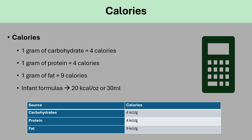Calories. One gram of carbohydrate will give you four calories. One gram of protein will give you four calories. One gram of fat will give you nine calories. Infant formula or breast milk: 20 calories per 30 mls, or 20 calories per one ounce.